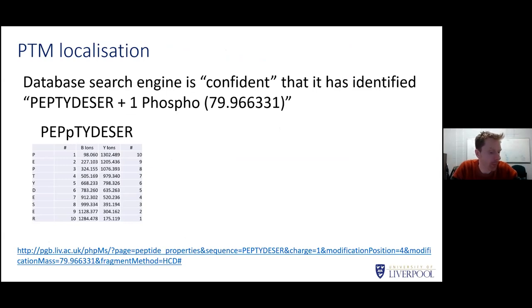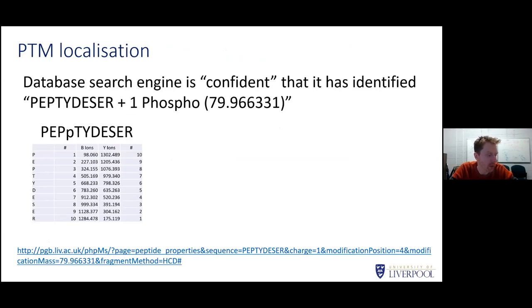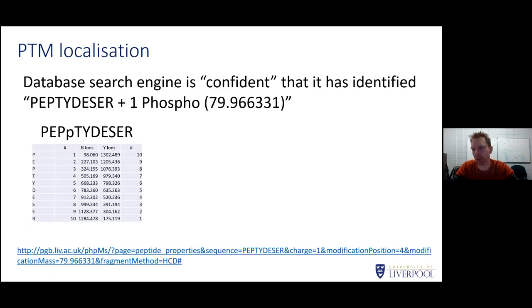I'm not going to talk at all about database search engines — I'm guessing most of you are fairly comfortable working with them. I'm going to jump in at a later step. Let's say our search engine says for a given spectrum it's identified the peptide sequence P-E-P-T-Y-D-E-S-E-R, and for its mass to fit the precursor mass it must have exactly one phosphorylation. The phosphorylation could be on the threonine, the tyrosine, or the serine — that's the working assumption in the vast majority of phosphoproteomic studies.